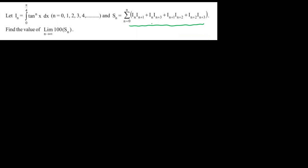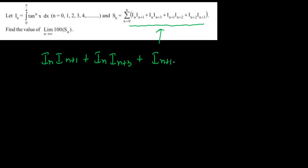So first of all, we are not going to integrate I(n) directly. Because if you put n equal to 0, n equal to 1, 2, and so on, this will give you a big expression. So first, you need to simplify I(n) — if you don't simplify it, it will become very difficult. So first we are going to simplify I(n+1) plus I(n) times I(n+3) plus I(n+1), multiplied by I(n+2) plus I(n+2) and I(n+3).